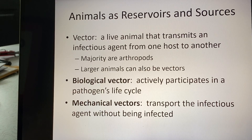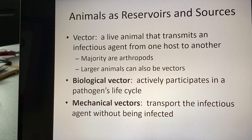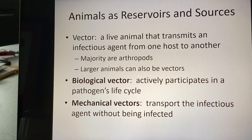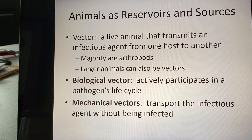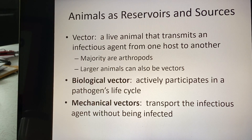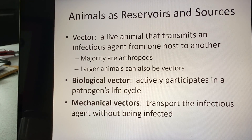A vector is a live animal that transmits an infectious agent from one host to another. We talked about arthropods in the parasite chapter — the majority of vectors are arthropods, but they can be other animals as well. For example, rabies can be spread by bats or raccoons. The majority of vectors, however, are arthropods.